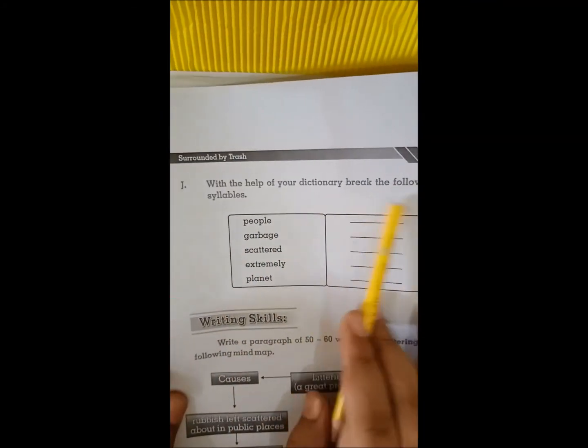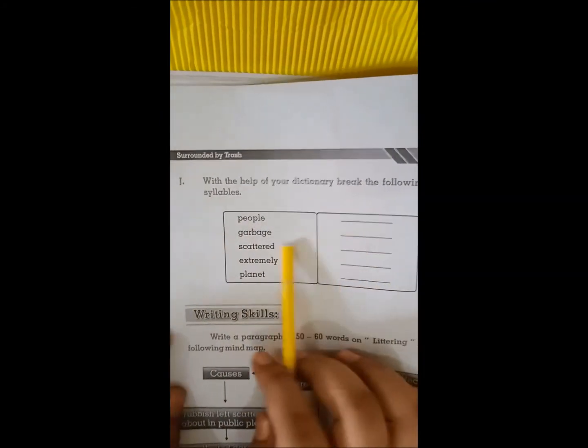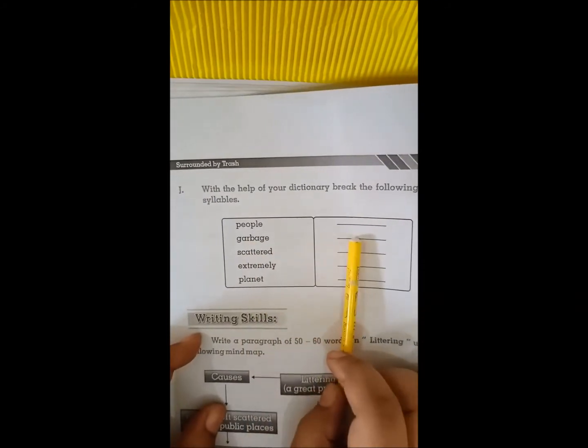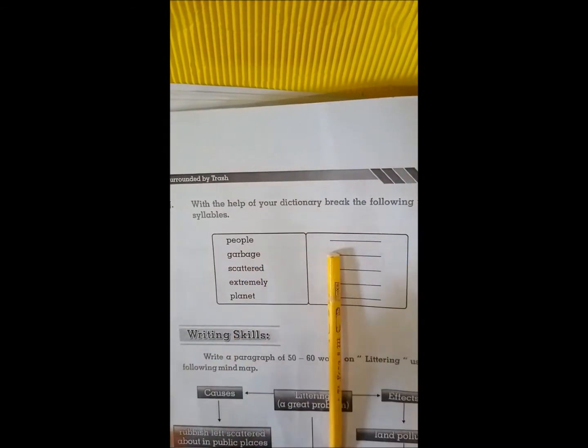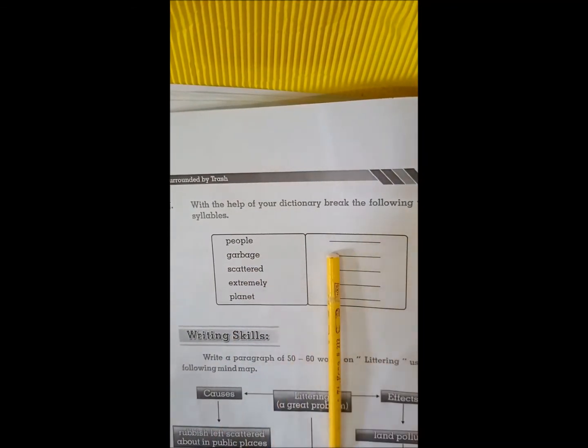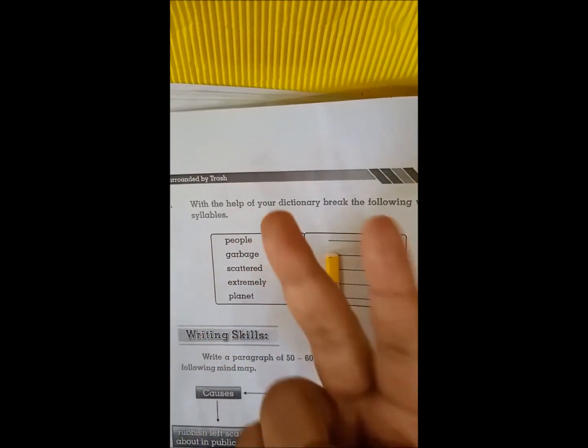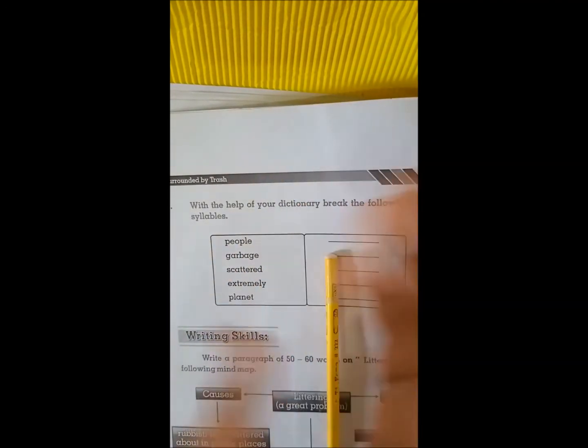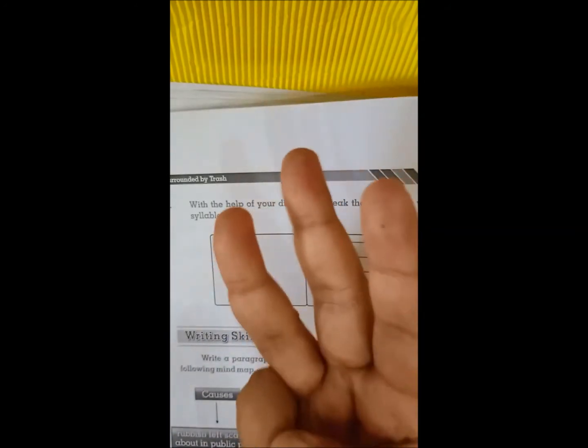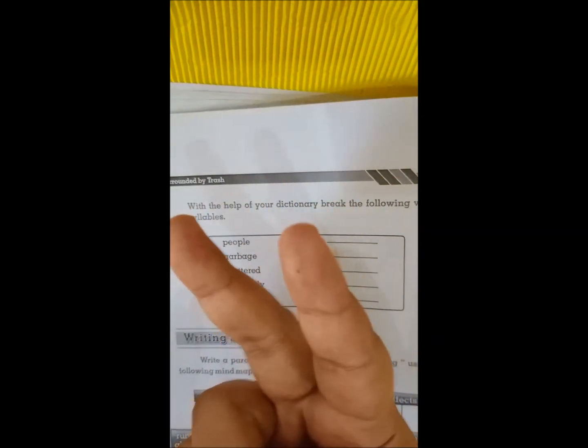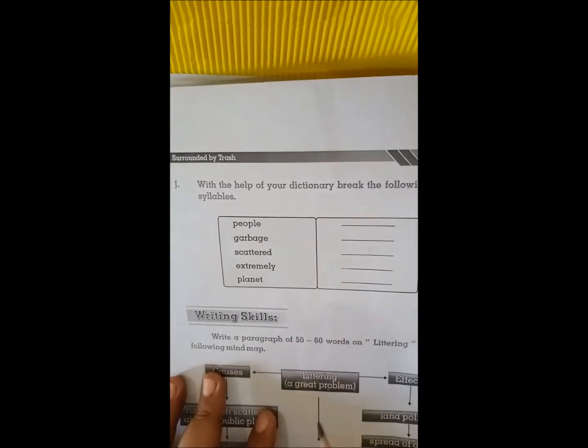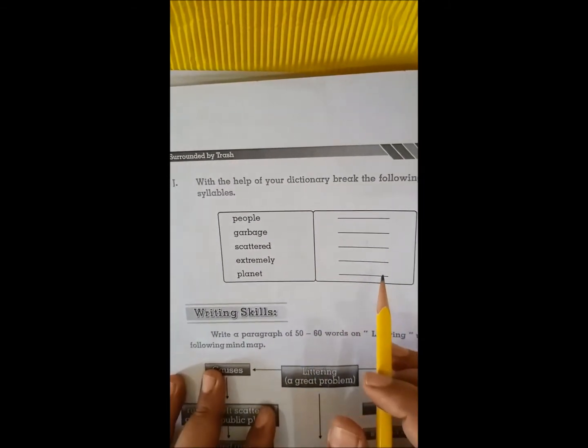Likewise, there are some words which are given here. With the help of your dictionary, break the following words into syllables. How many syllables? People: two syllables. Garbage: two syllables. Standard: two syllables. Extremely: three syllables. Language: two syllables. Planet: two syllables. This is very easy to guess the syllables in the word. You can clap and say the word.